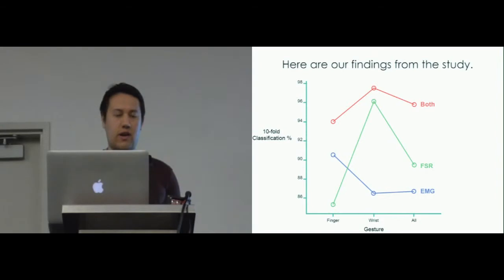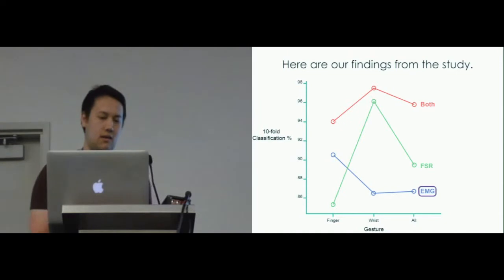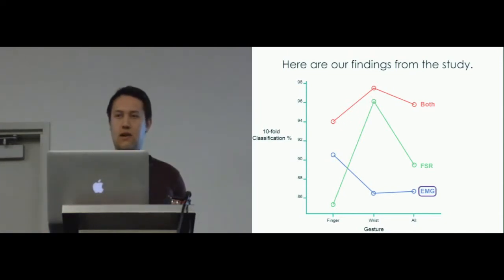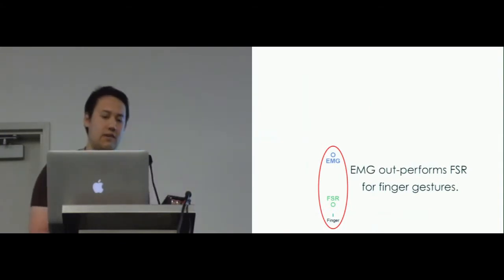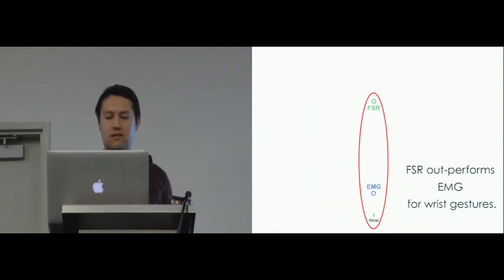Here are our findings from the study. We've got accuracy on the left-hand axis and gesture sets on the bottom, and each line represents a particular configuration of sensors. FSR here is the pressure sensors. To note firstly, EMG is quite successful when used by itself, with an average accuracy of above 86% for all gesture sets. For finger gestures, EMG outperforms the pressure sensing by about 5%.